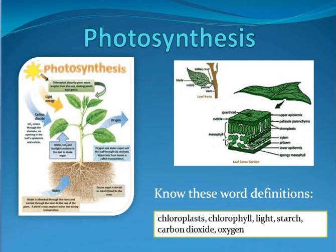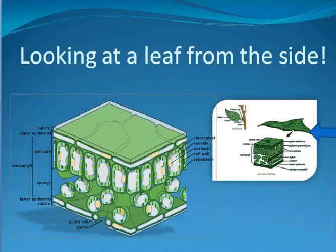Primarily the chloroplasts are found in the palisade layer. You can also see some in the spongy layer. Now, remember we talked about where gases come in and out — the carbon dioxide enters the plant and oxygen is released through little holes in the top and bottom of the leaf. These are called stomata, or stoma.